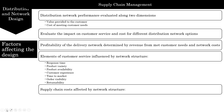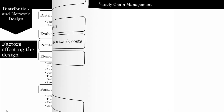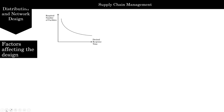Supply chain costs are also affected by the network structure because it affects inventory, transportation, facilities, handling, and information. Note that these are four of the six supply chain drivers discussed previously. The other two drivers, sourcing and pricing, also affect the choice of distribution system and will be discussed when relevant.